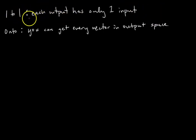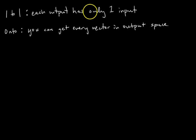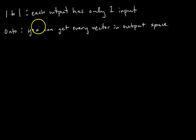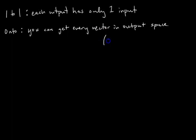What does a one-to-one linear transformation mean? A transformation is one-to-one if each output of the transformation has only one corresponding input. So if two vectors have the same output, then that transformation is not one-to-one. Onto, on the other hand, means a transformation is onto if you can get every vector in the output space by doing the transformation of some appropriate input vector. The vectors you can get by applying the transformation are by definition the range, and the output space is the co-domain. So equivalently, a transformation is onto if the range equals the co-domain.